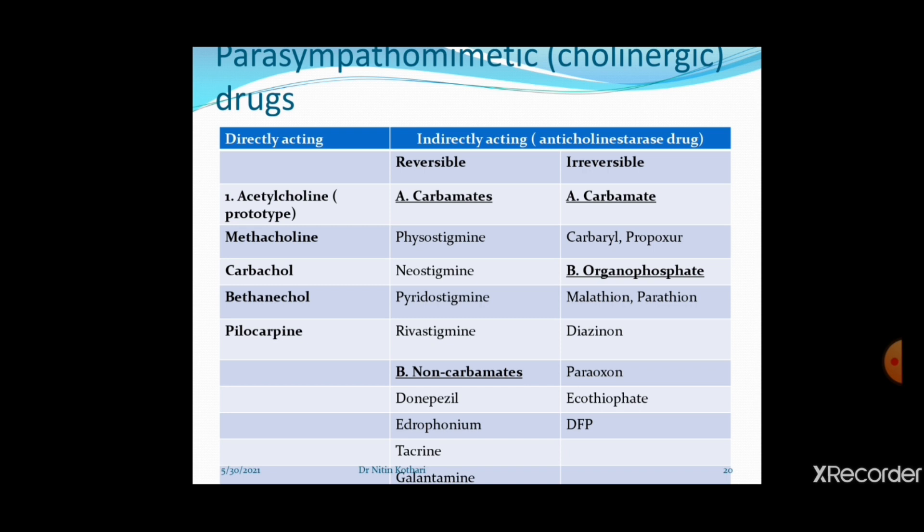How do indirectly acting cholinergic drugs work? They inhibit the cholinesterase enzyme, which is responsible for breakdown of acetylcholine. When this enzyme is inhibited, acetylcholine remains in the synaptic cleft for a prolonged time. So these drugs are also called anti-cholinesterase drugs, and indirectly acting cholinergic drugs and anti-cholinesterase drugs mean the same thing.